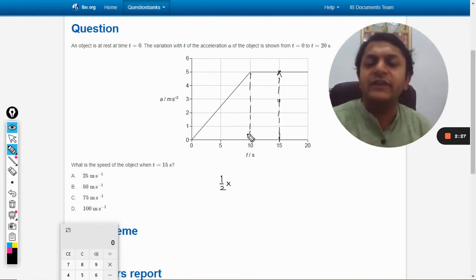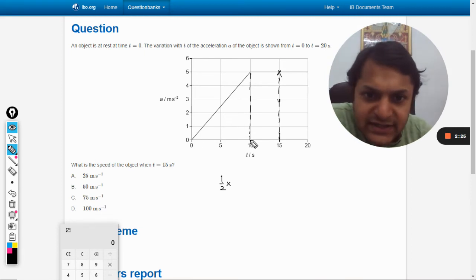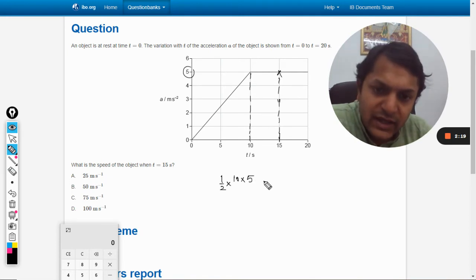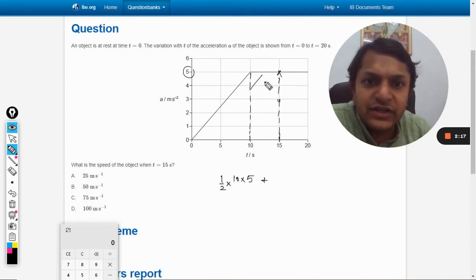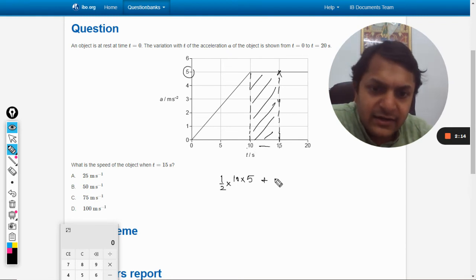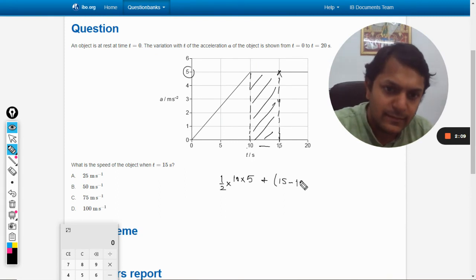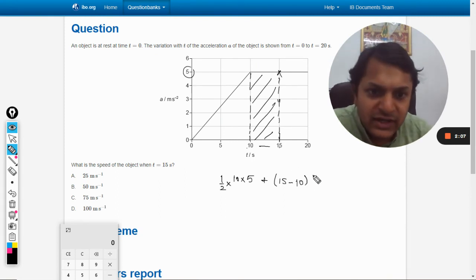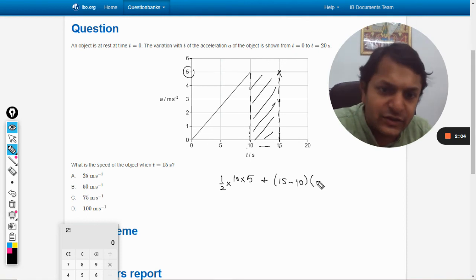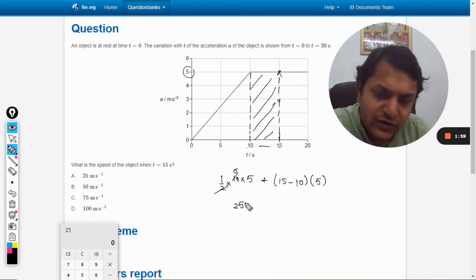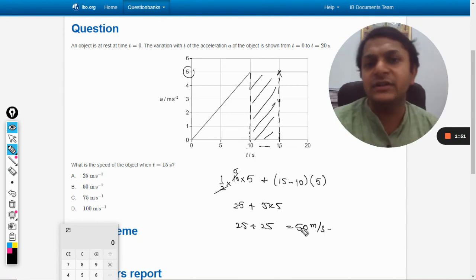Like this, half into base into height for triangle. So what is the base? It is 10 seconds into height. What is that? 5 plus. Now area of this rectangle. So it will be 15 minus 10. That is the base. Multiply by the length of the rectangle or the height that is 0 to 5. So it will be 5. So this is coming out to be 25 plus 5 into 5. Again 25. So it is 50 meter per second.